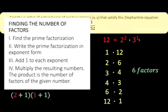So this exponent 2 plus 1, that's the number here. This exponent 1 plus 1, this is the other factor. Then step number 4, multiply the resulting numbers. So you have 3 times 2, which is equal to 6, which is the same as these 6 factors.